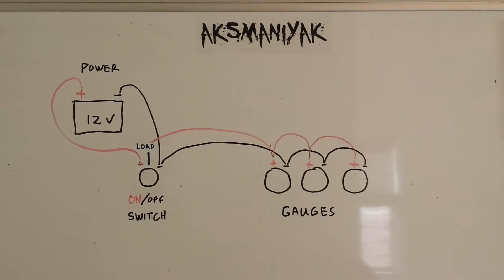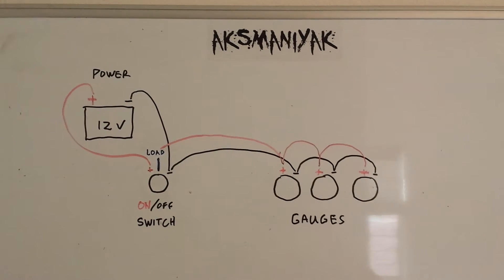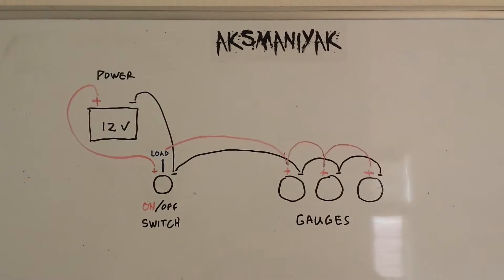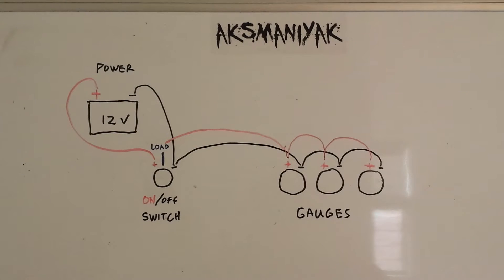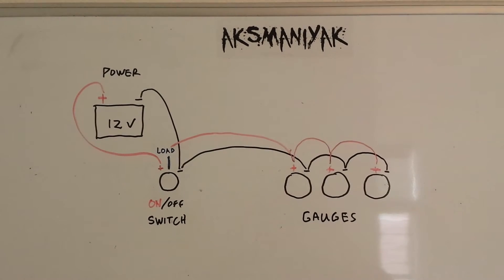This is the circuit diagram for the battery box. On the right I have the three circles which indicate the gauges. I have all the negative terminals pigtailed together as well as all the positive terminals.